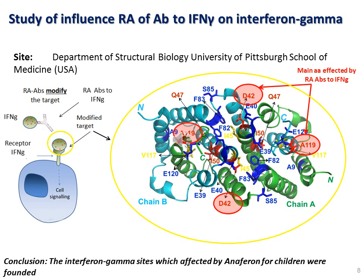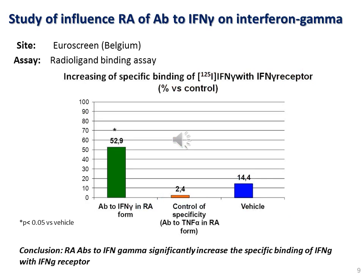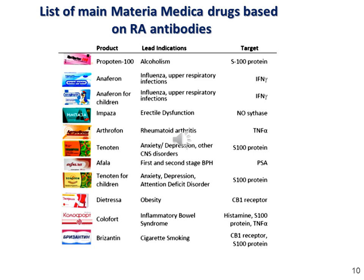We succeeded in finding the amino acids which are most influenced by release active antibodies. To prove this hypothesis we used a radio ligand binding assay, which showed that the binding of interferon gamma with its receptor was significantly increased in the presence of release active antibodies to interferon gamma. By this time, Materia Medica, the company founded by Professor Epstein, had produced about 20 medicines based on release active antibodies to different targets, including cytokines, neuropeptides, receptors, and enzymes.